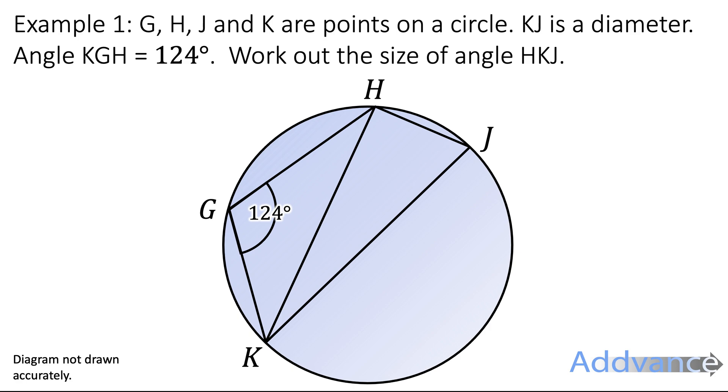So example one, it says G, H, J and K are points on a circle. KJ is the diameter. Angle KGH is 124 degrees. Work out the size of angle HKJ.